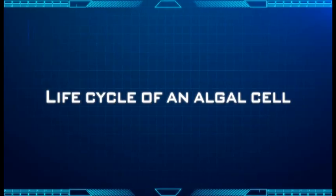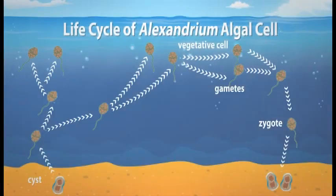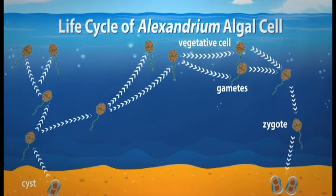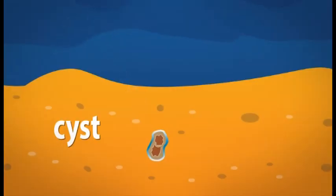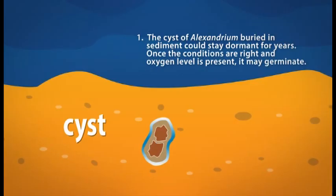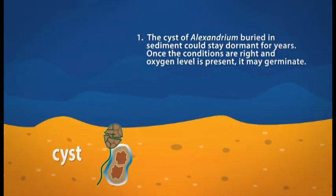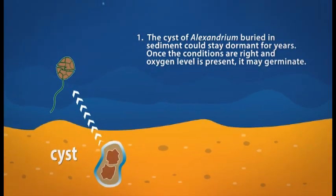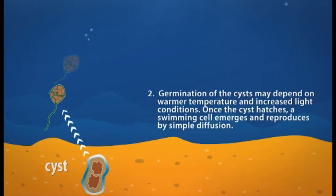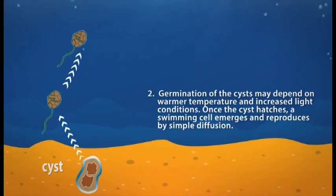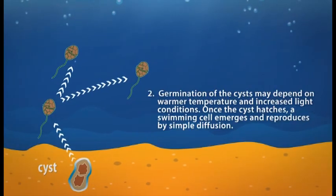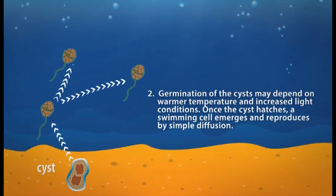Life cycle of an algal cell. We will take a quick look at the life cycle of the Alexandrium algal cell. Step 1: The cyst of Alexandrium buried in sediment could stay dormant for years. Once the conditions are right and oxygen is present, it may germinate. Step 2: Germination of the cyst may depend on warmer temperature and increased light conditions. Once the cyst hatches, a swimming cell emerges and reproduces by simple division.